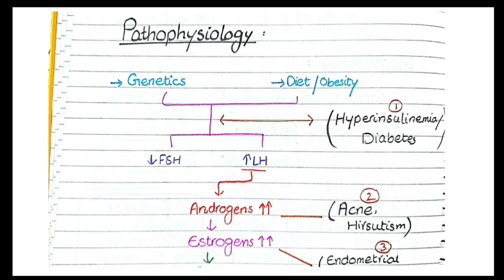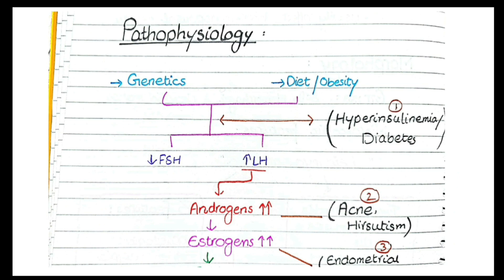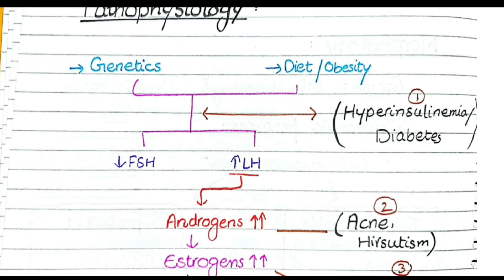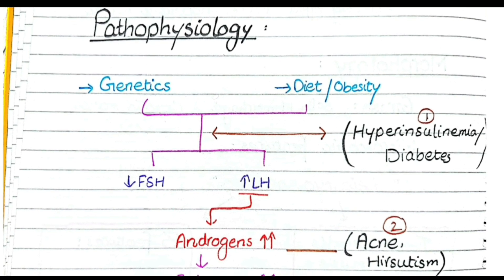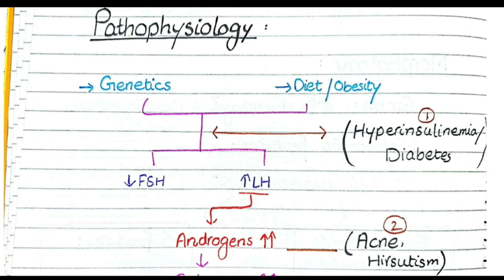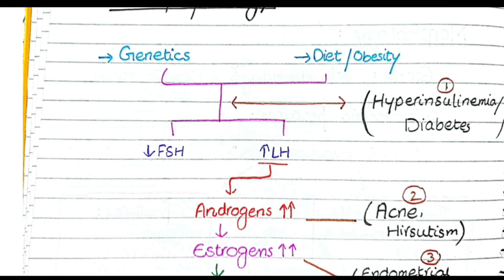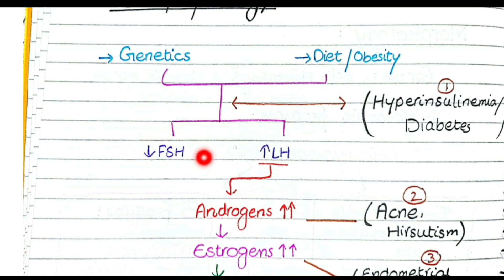The pathophysiology of polycystic ovarian syndrome is complex and is considered a vicious cycle. Just like most acquired disorders, polycystic ovarian syndrome is caused by the interaction between bad genes and bad dietary habits or obesity. So genetics and diet or obesity interact to drive the pathogenesis of polycystic ovarian syndrome.